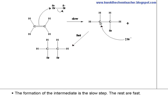The formation of the intermediate is the slow step. The rest are fast steps. This is the electrophilic addition when Br2 in CCl4 is used.